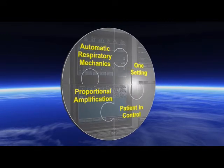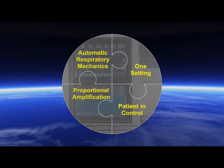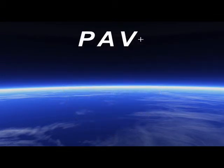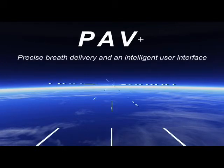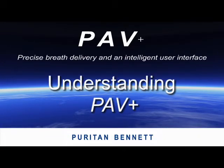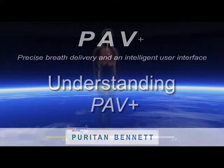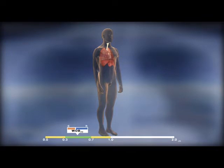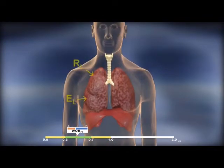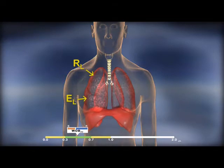Percent support is your primary setting. To understand PAV Plus, we must first understand some of the physiology behind normal respiration. When we take a breath, the diaphragm must work to overcome a couple of specific forces — the elastic and resistance forces of the lungs and thorax. PAV Plus will uniquely monitor changes in elastance and resistance by performing automated random measurements every four to ten breaths. These measurements are used in the breath delivery strategy of PAV Plus.